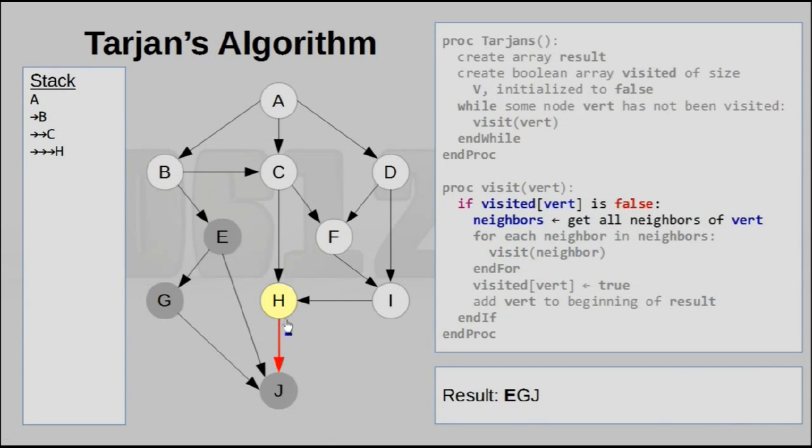H only has one outgoing edge once again, so we go down to J. We realize that J has been visited, so we do nothing, allowing us to backtrack to H. H has no more neighbors, which is why we are done with this particular node. We simply add H to the start of the result, and we can backtrack once again to C.